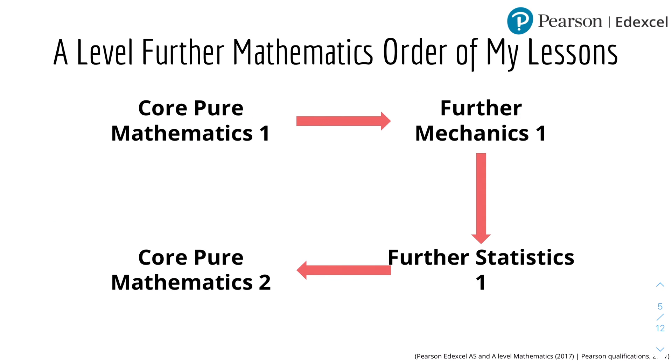And here are the order of my lessons so that you get used to what I'm teaching first or next. So I'll start with Core Pure Mathematics 1, then I'll move on to Further Mechanics 1, then I'll move on to Further Statistics 1, and then lastly I'll be doing Core Pure 2. So it's basically Year 1, Year 1 and Year 2, Year 1 and Year 2, and basically Year 2.